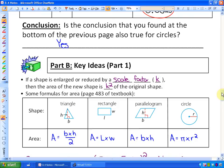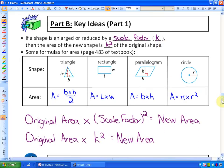We use a different letter for scale factor if you're using the same textbook as us, but it doesn't really matter. But here's the idea. If a shape is enlarged or reduced by a scale factor, we use the letter K in this course, then the area of the new shape is K squared of the original shape. Or in other words, and this is something you're going to want to copy down, here's the big idea.